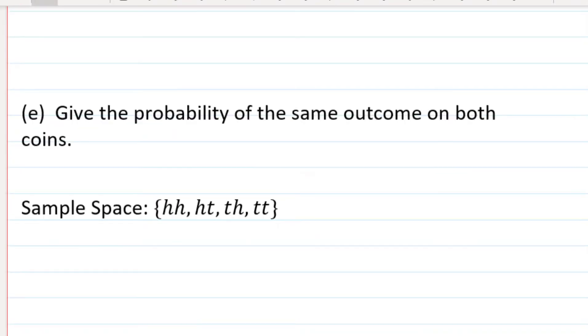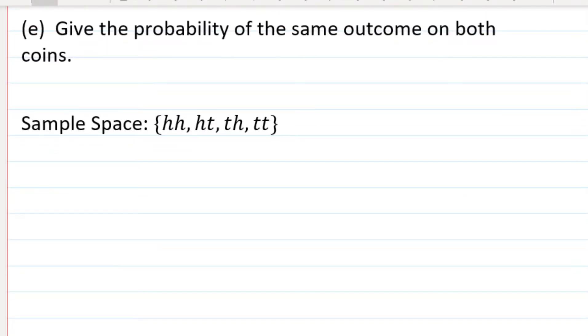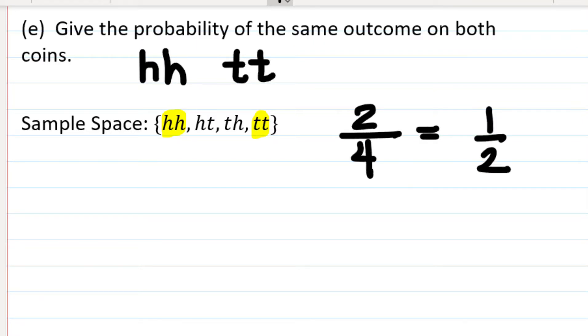And lastly, Part E, give the probability of the same outcome on both coins. Well, that would mean that we could either have HH where they're both heads, or we could have TT for both being tails. So we see that that happens here and here. So the probability is going to be two favorable outcomes out of four possible. Again, that two-fourths reduces to one-half. So the probability of the same outcome on both coins is one-half.